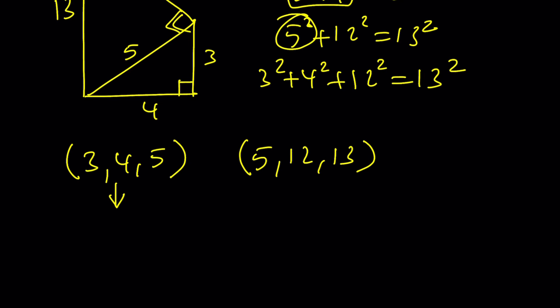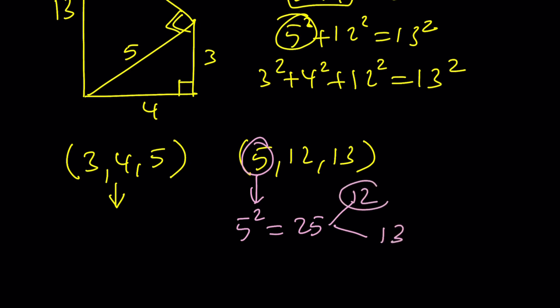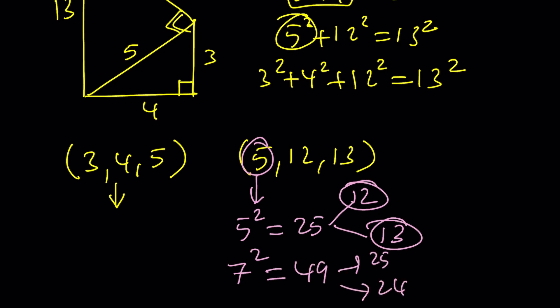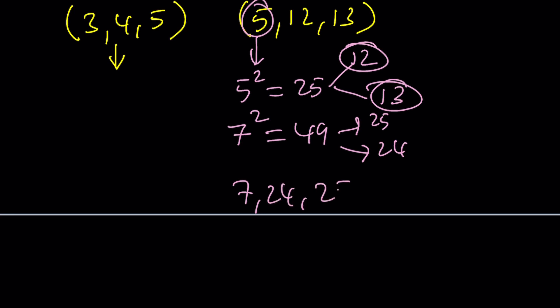There's a way to generate a triple like 5, 12, 13. You take an odd number like 5, square it to get 25, then split it into two pieces as close as possible — since 25 is odd you can't split equally, but you get 12 and 13, the other two side lengths. Take 7 squared: that's 49, which splits into 25 and 24, giving the triple 7, 24, 25. But can you get all triples this way? For example, can you get 8, 15, 17 from this method? That's a good question.